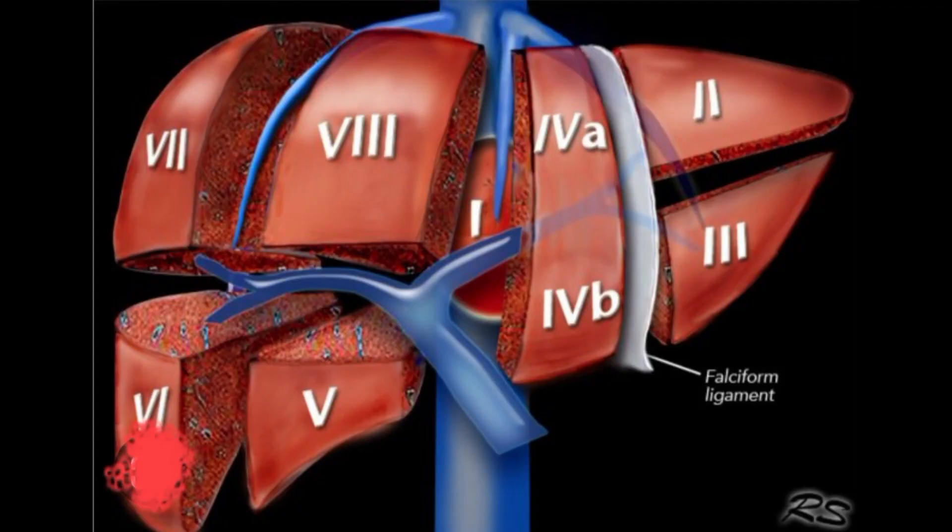This is a very important case about the gallbladder mass. First, you have to understand the anatomy of the liver and the gallbladder. The liver has been divided into eight segments on the basis of the Couinaud classification. From the picture you can understand the different segments of the liver, which are organized according to the drainage of the liver.